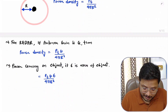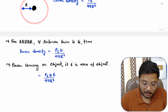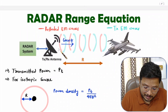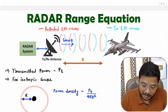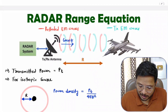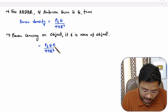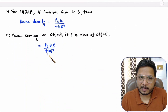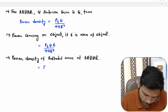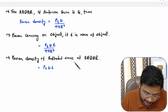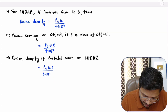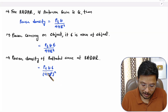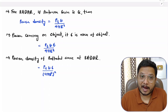We have calculated the power on the object as Pt·G·σ divided by 4πr². Now, the power density of the reflected wave back at the radar is this power divided by the spherical area 4πr². So we divide again by 4πr², giving a denominator of (4πr²)². This gives us the power density of the reflected wave at the radar.